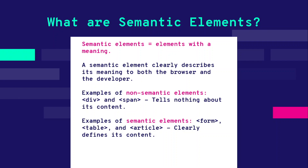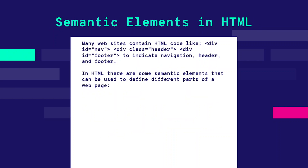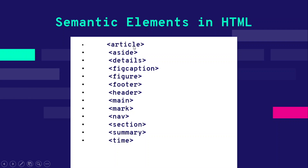Examples of semantic elements are form, table, and article — they clearly define their content. Many websites have HTML like div with an ID of nav or an ID of footer, but instead of that we use semantic elements. The article tag is used for showing large content like blog posts. The aside tag is used for showing content on the right or left side. The details tag creates a collapsible section showing details of a particular element. We also have figcaption and figure.